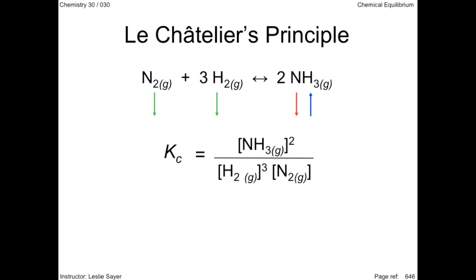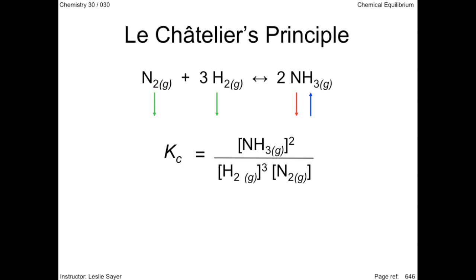This arrow coloring used here is not a convention, rather a way to clearly indicate the course of events to re-establish equilibrium following a change. Le Chatelier's principle can be defined as the following: A dynamic equilibrium responds so as to relieve the effect of any change in the conditions that affect the equilibrium. This is a qualitative way to predict the way an equilibrium system responds to change.